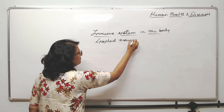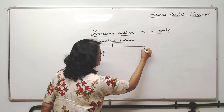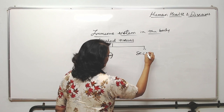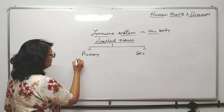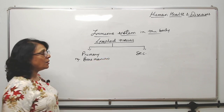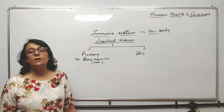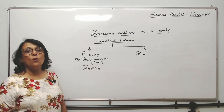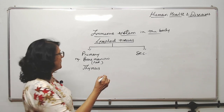These lymphoid tissues are classified into two categories: primary lymphoid tissue and secondary lymphoid tissue. How do we differentiate between the primary and the secondary? The primary lymphoid tissue examples are bone marrow — and when we talk about bone marrow it is the red bone marrow; yellow bone marrow is only the fat-storing bone marrow — and thymus. These are the only two primary lymphoid tissues.